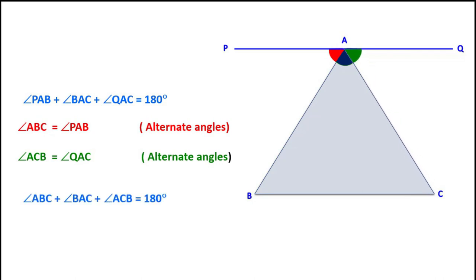By this, we can conclude that angle ABC plus angle BAC plus angle ACB is equal to 180 degrees.